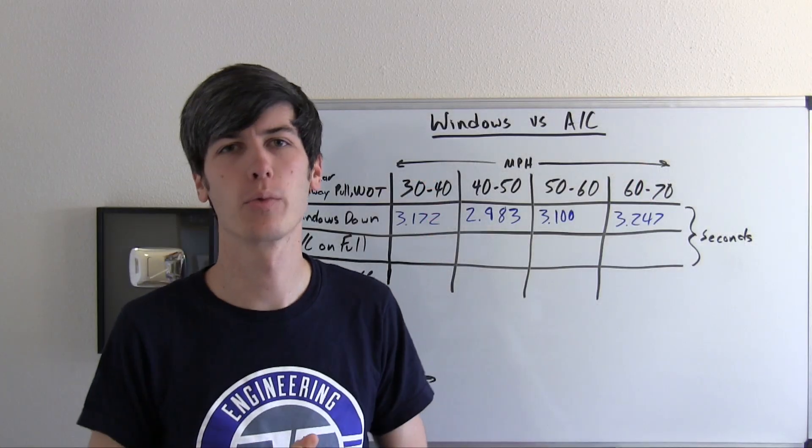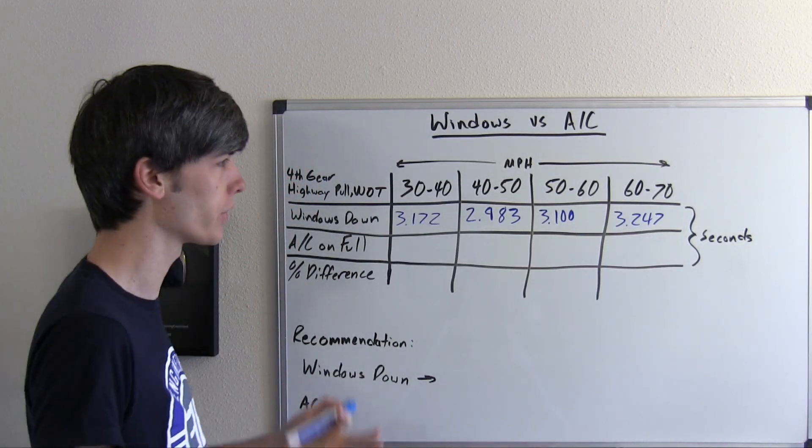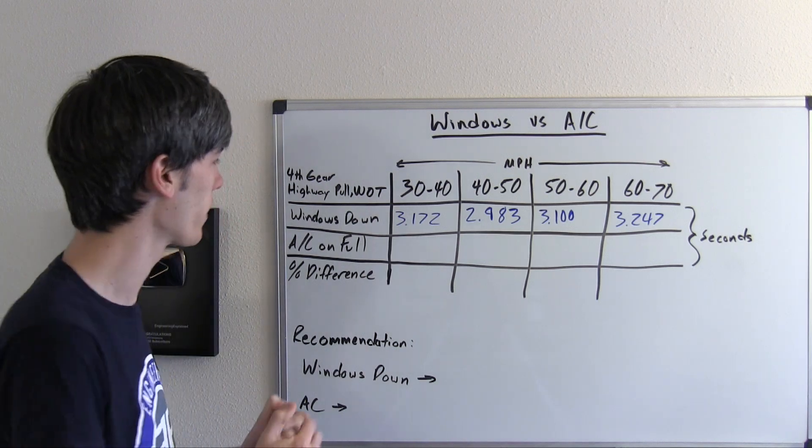Overall the runs with the windows down were pretty consistent. Only half of a percent of a difference between the fastest and the slowest. So that's good to see the repeatability there.